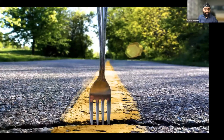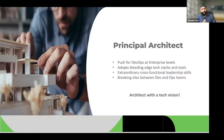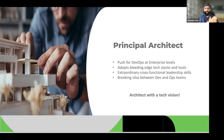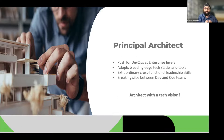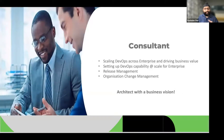After the DevOps architect level, there's a proverbial fork in the road. You could evolve into a principal architect — a DevOps architect with a technology vision, pushing DevOps at the enterprise level across all technology stacks, from front-end Adobe AMS all the way down to legacy applications and mainframes, adopting bleeding-edge technologies, and breaking silos between development and operations to create cross-functional teams.